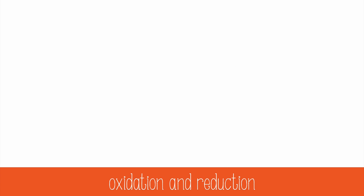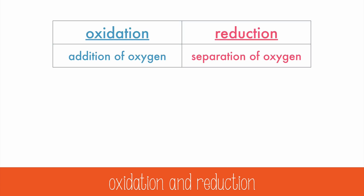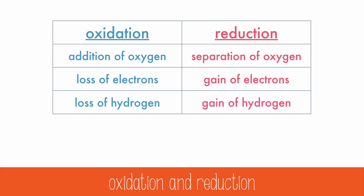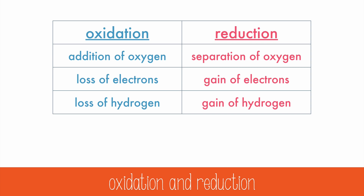The current definition reveals that oxygen is not always involved in oxidation and reduction, but loss of electrons is always connected to oxidation, and a gain of electrons is connected to reduction. Often, oxidation involves a loss of hydrogen, and reduction a gain of hydrogen. Oxidation also involves a loss of energy, and reduction a gain of energy.